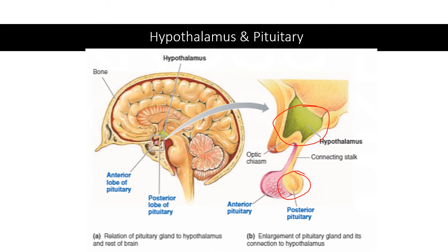The posterior pituitary does not actually make the hormones. Rather, this is done in the hypothalamus by the supraoptic nucleus and the paraventricular nucleus. The pituitary just stores the hormones until they are to be released. Although these hormones are made and stored in these areas, only one is released at a time, and when they are both needed, they serve different purposes.